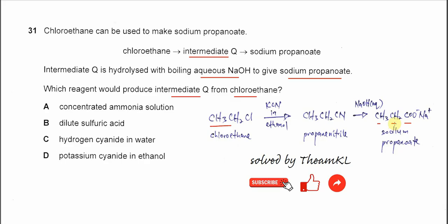It will be a cyanide that substitutes the chlorine. The chlorine in the chloroethane will be substituted by a cyanide, and this will introduce an extra carbon to the compound. So for step one, we need to use KCN in ethanol. The cyanide will substitute the chlorine and form propanenitrile.